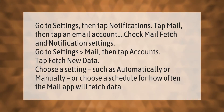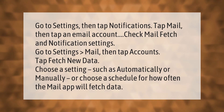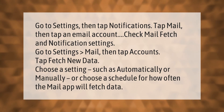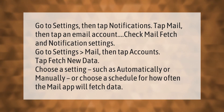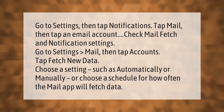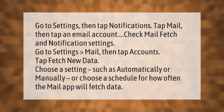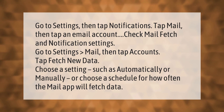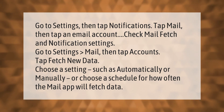Check mail fetch and notification settings. Go to Settings, then Mail, then tap Accounts. Tap Fetch New Data and choose a setting such as Automatically or Manually, or choose a schedule for how often the Mail app will fetch data.